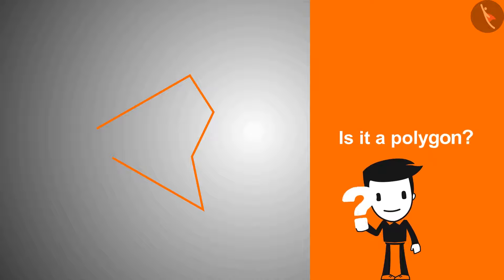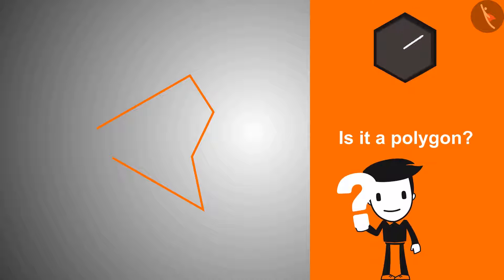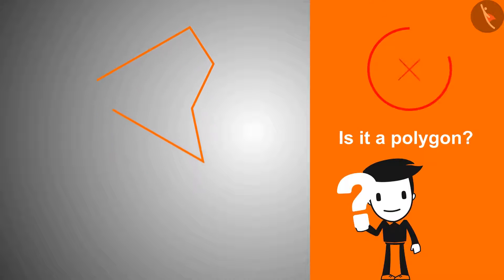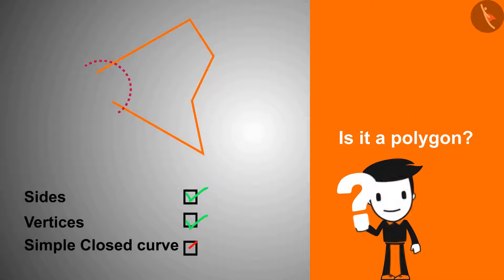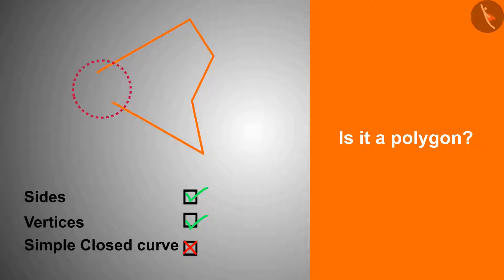The next shape — is it a polygon? No, because it is an open curve, it cannot be a polygon.